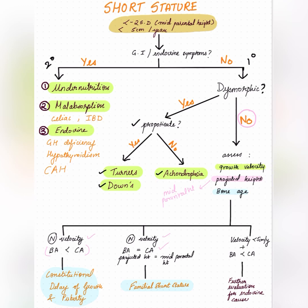The most common cause of secondary short stature in developing nations is undernutrition, including kwashiorkor and marasmus. Other causes include malabsorption such as celiac disease and IBD, and endocrine causes such as growth hormone deficiency, hypothyroidism, and congenital adrenal hyperplasia. If any of these secondary causes are identified, refer the child to a specialist.